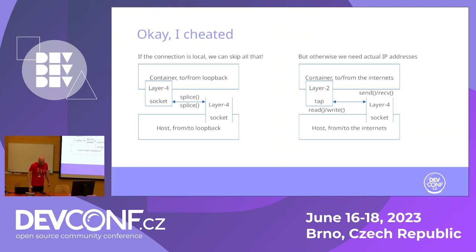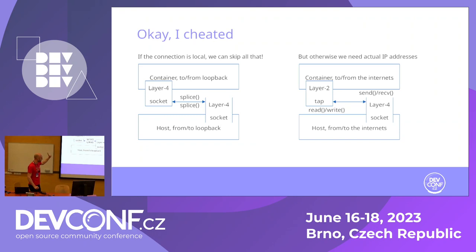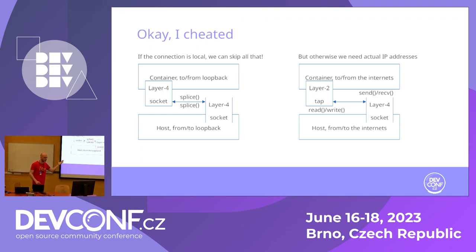Splice is a system call in Linux that allows you to splice to a pipe, from a pipe to a socket, from that socket to a pipe, pipe to socket. You don't need to do anything special. However, we are just carrying payload there, which means I can just use the loopback interface. But if we want to go to the internet, we need to do this trick I was mentioning earlier — we really need to append and remove headers.